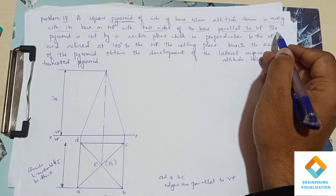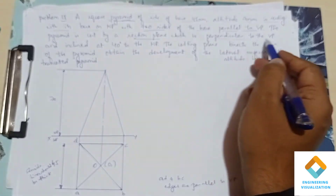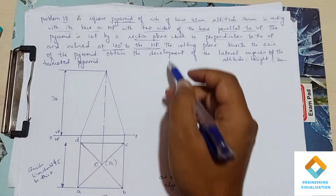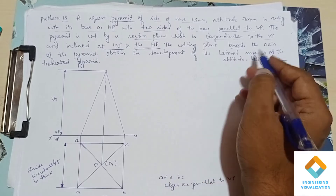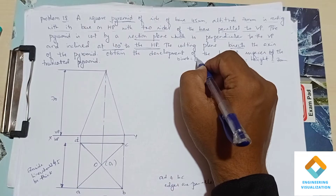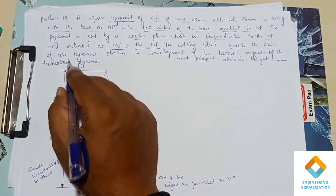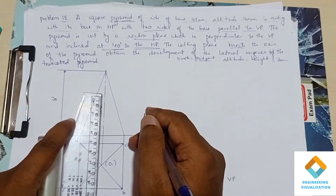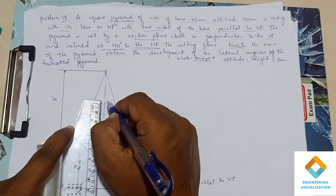Now we have to show the cut plane. The pyramid is cut by a section plane which is perpendicular to VP and inclined at 40 degrees to the HP. This cutting plane bisects the axis — bisect means exactly the midpoint. The axis length is 70mm, so the midpoint is at 35mm.